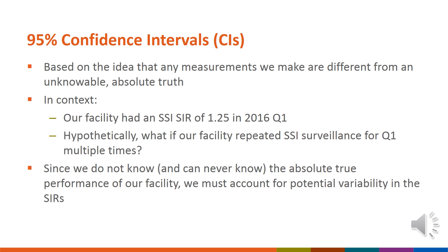Another statistical measure that's commonly used is the 95% confidence interval. This interval is a measurement of statistical precision and is interpreted together with the p-value. We use this interval to address the idea that a hospital's SIR is a measurement, and that this measurement is different from an unknowable, absolute truth. For example, our hospital's SSI-SIR for 2016 Q1 was 1.25. Hypothetically, if our hospital repeated SSI surveillance for the entire quarter, would you expect the SIR to be exactly the same? Probably not.